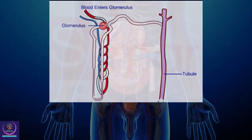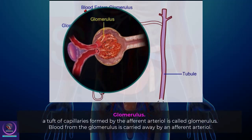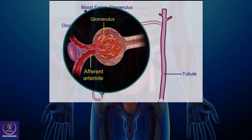The glomerulus and the renal tubule. The glomerulus is a tuft of capillaries formed by the afferent arteriole. Blood from the glomerulus is carried away by an efferent arteriole.